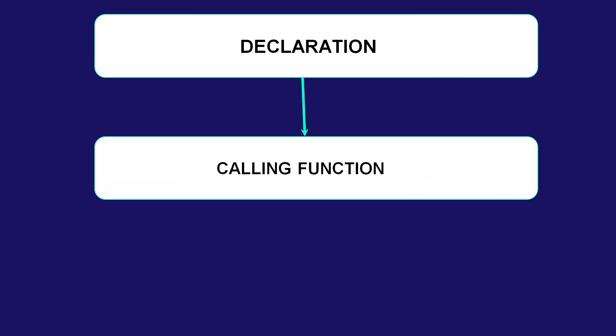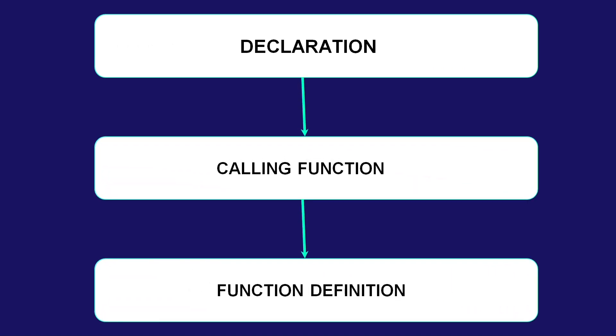Before we begin, you should understand that while implementing a function procedure in QBasic or any programming language, you need to do three things. First is declaration of the function. Next is calling the function. And the last is the function definition. Declaration means you should declare what is the name of the function and what are the parameters.